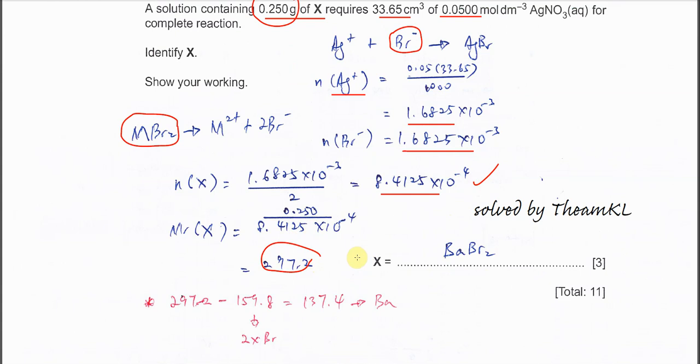From here you can deduce what the Group 2 element is. We know it's MBr2. Use the mass calculated here minus 2Br. Two times Br you get this. Then you get 137.4, which is barium. So X must be barium bromide. That's all for this question. Thank you.